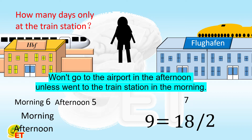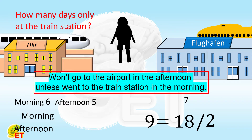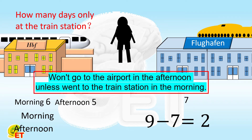Unless he went to the train station in the morning, he would not go to the airport in the afternoon. That is to say, he was never at the airport for the whole day. Then the seven times at the airport in fact means seven days. The total number of days when he went to the train station both in the morning and afternoon is therefore nine minus seven, which equals two days.